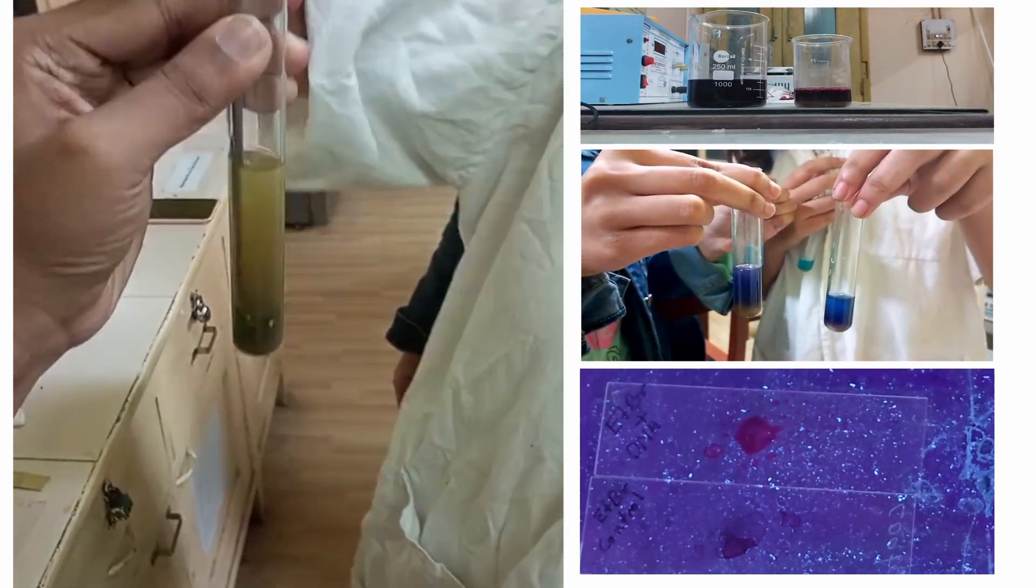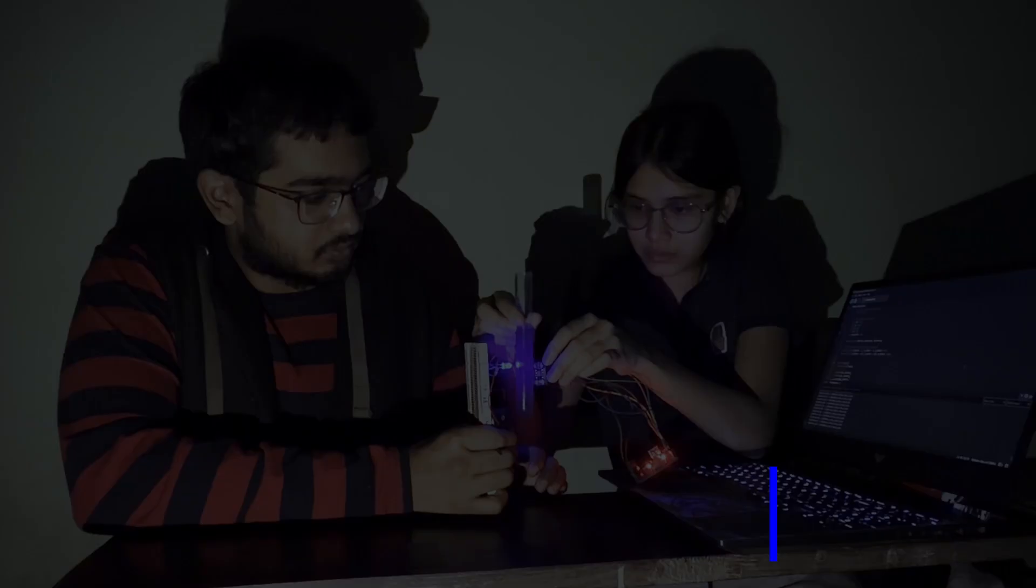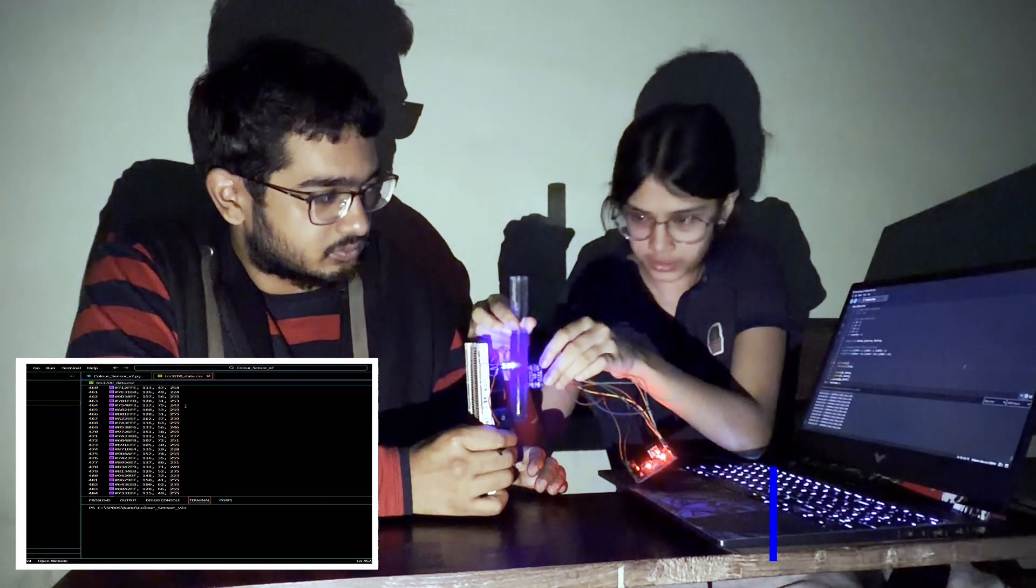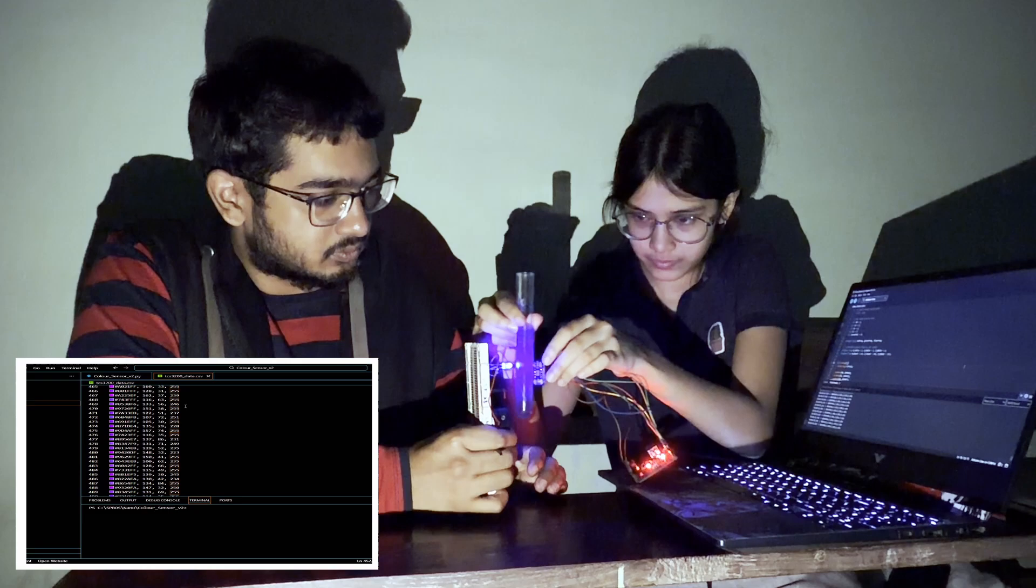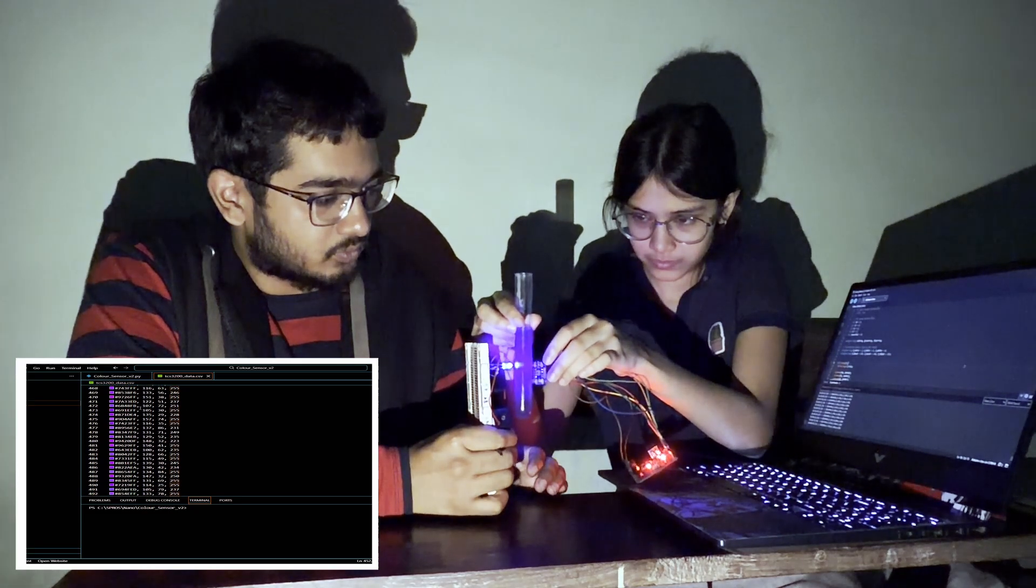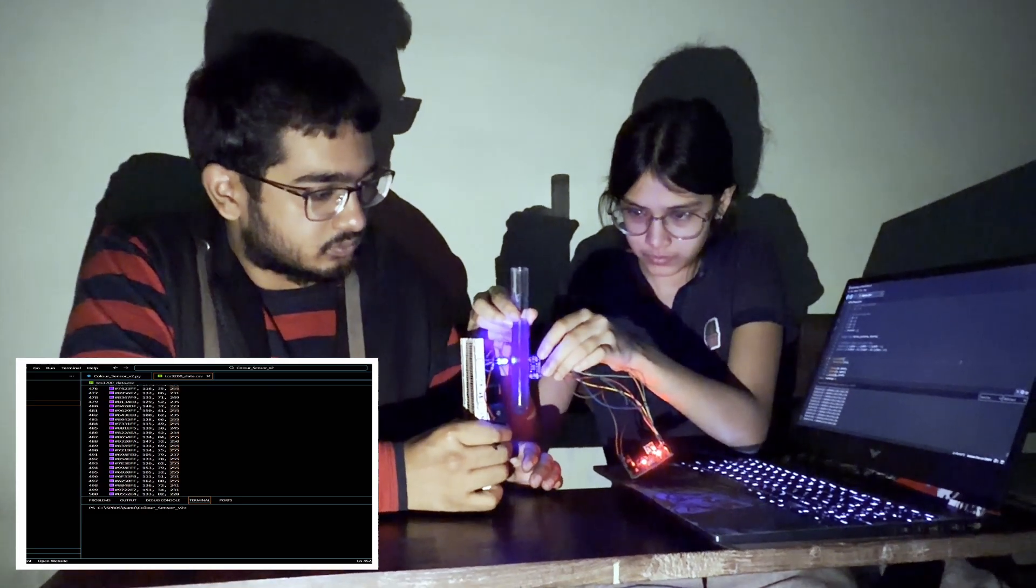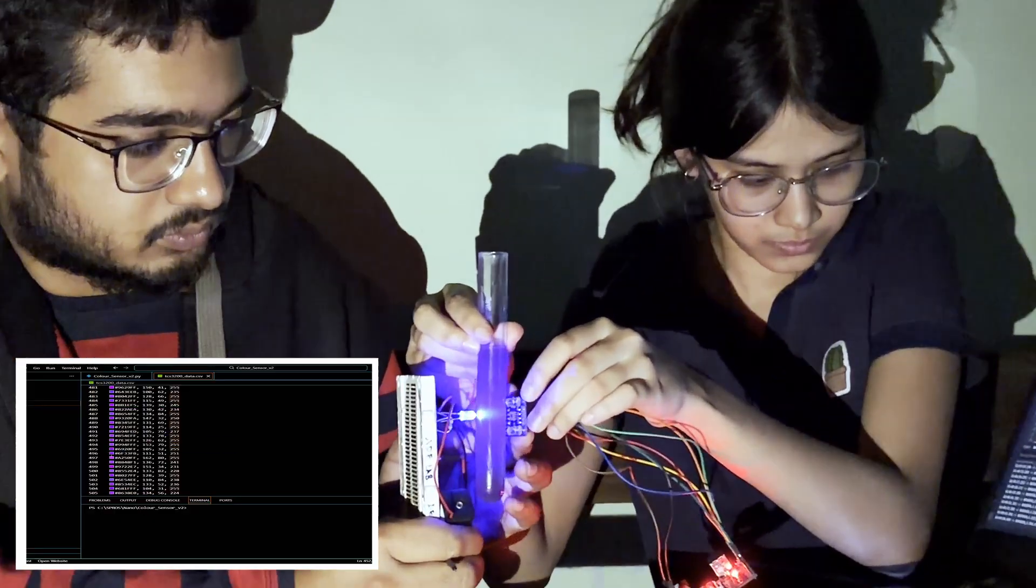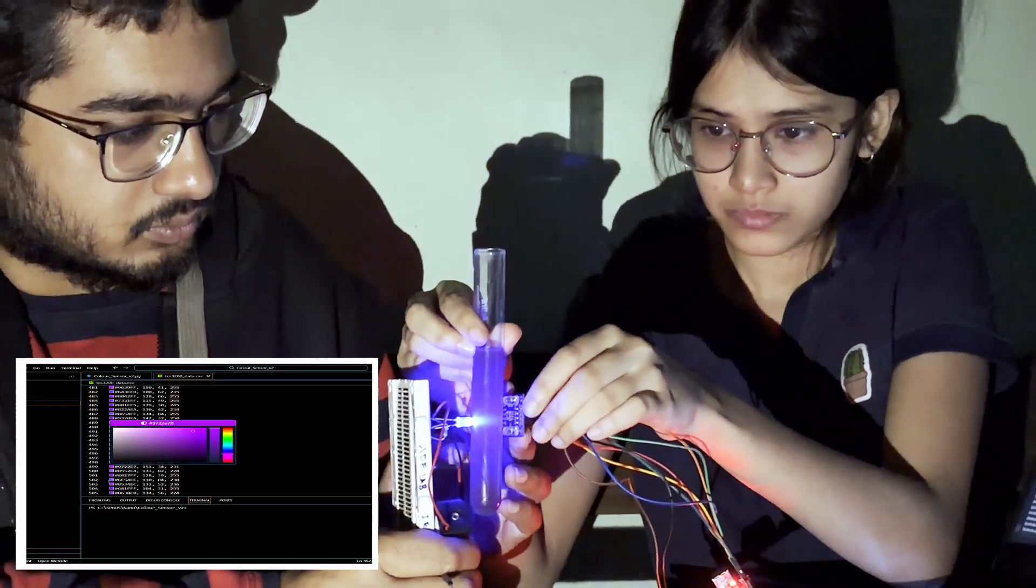In the rover, instead of a sophisticated spectrophotometer, we use a simple TCS3200 color sensor meticulously adapted for fluorometric and colorimetric measurements. After calibration using a spectrophotometer, the color-based results successfully estimate chemical concentration.